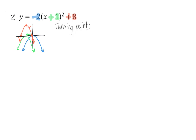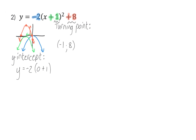Remember that we can read the turning point from the equation by taking the p-value with the opposite sign and then the q-value as it is. To determine the y-intercept, I am going to substitute the x-value in the equation with 0 and then simplify. So the y-intercept will be at (0, 6).